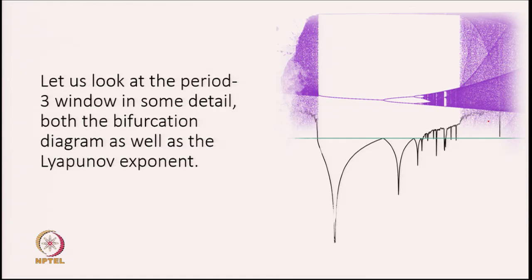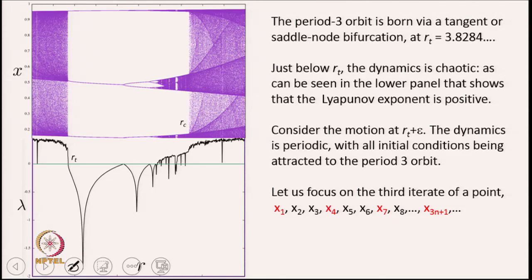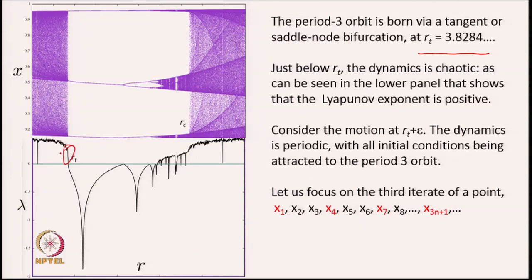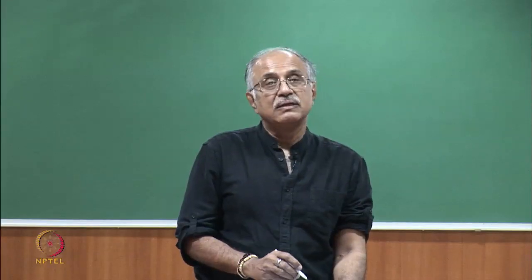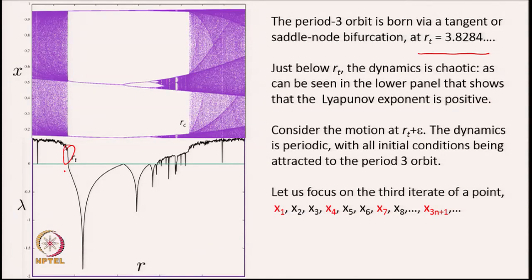Schematically we have the bifurcation diagram with the Lyapunov exponent superimposed. Notice that the tangent bifurcation occurs at r_t = 3.8284. Just below this point of tangency, the Lyapunov exponent is positive, which says that the dynamics just below the tangent bifurcation is actually chaotic. Once you have this tangency, the Lyapunov exponent becomes 0 at the bifurcation — because the slope of the map equals 1 in modulus — and subsequently a period-3 orbit is born.